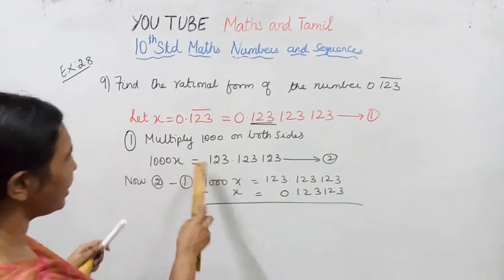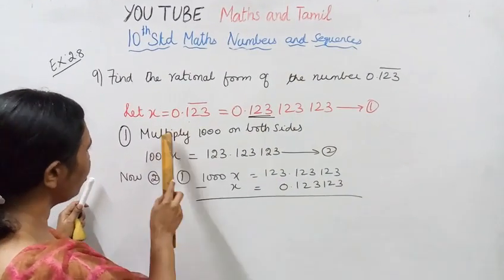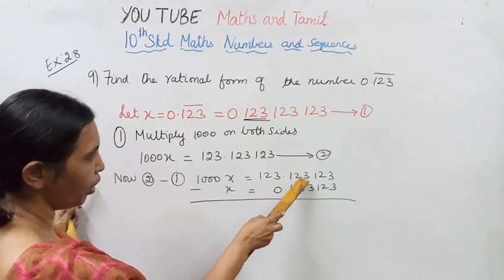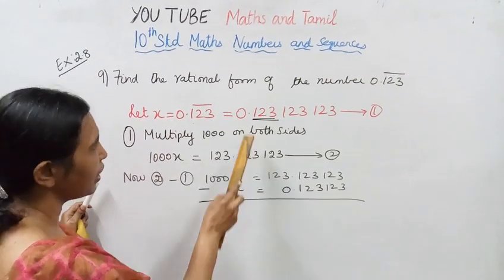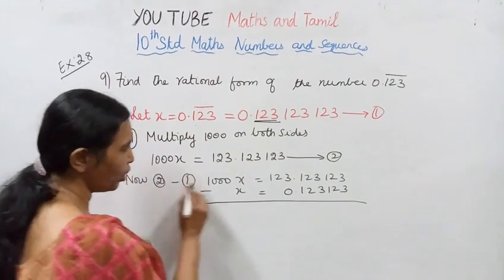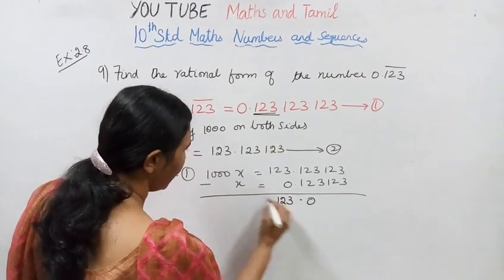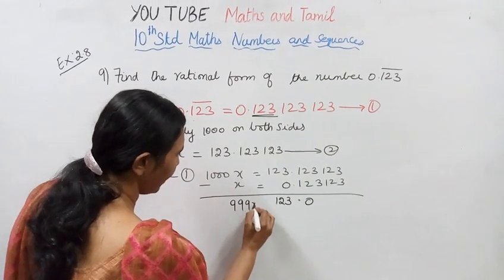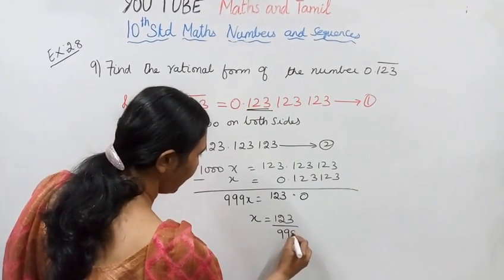Now subtract equation 1 from equation 2. 1000x minus 1x equals 123.123... minus 0.123... The repeating parts cancel. 1000x minus 1x equals 999x, and that equals 123.